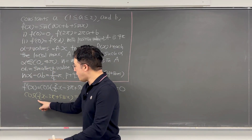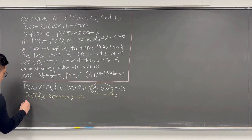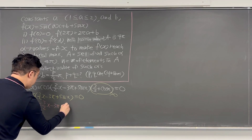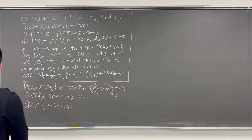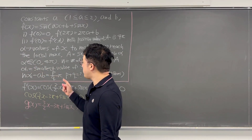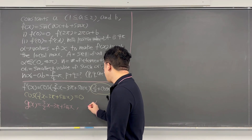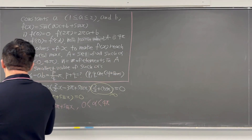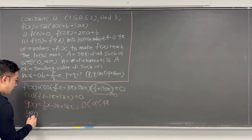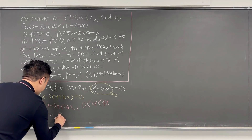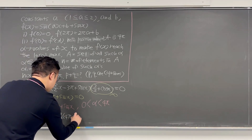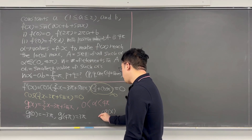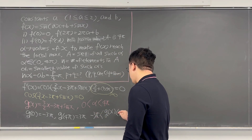Let g(x) = 3/2·x − 3π + sine(x). With α between 0 and 4π, we find g(0) = −3π and g(4π) = 3π. So g(x) ranges from −3π to 3π over this interval.